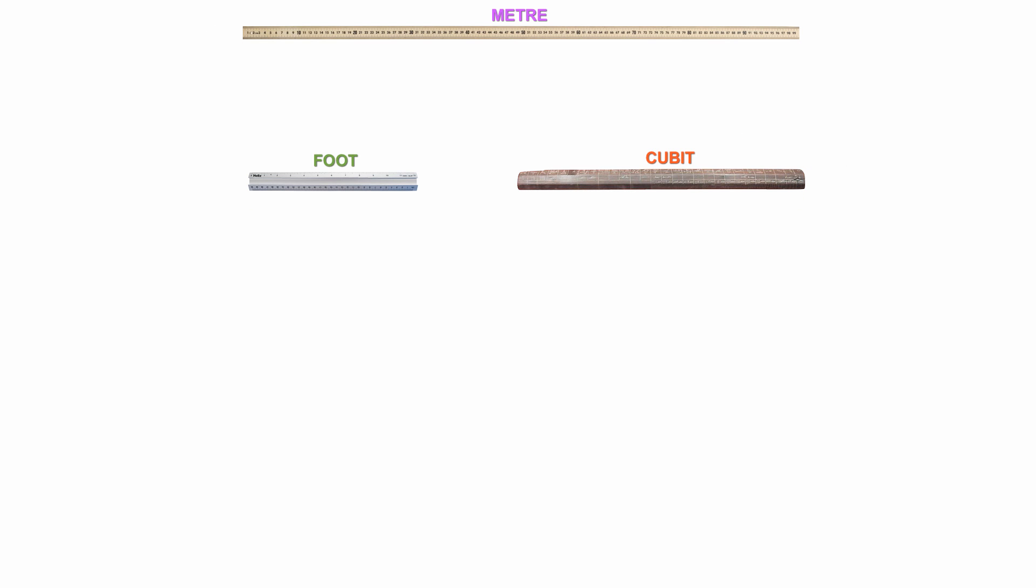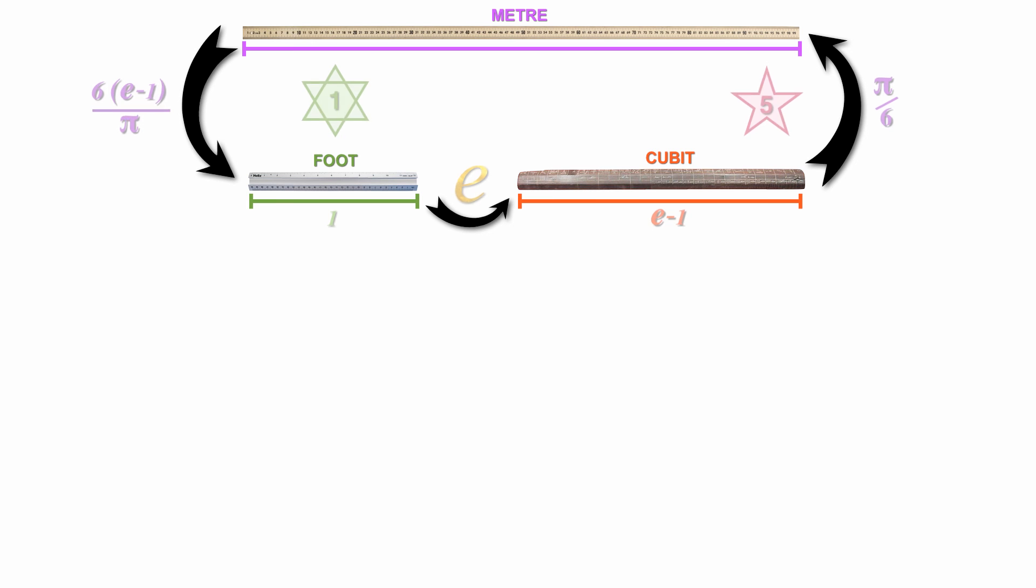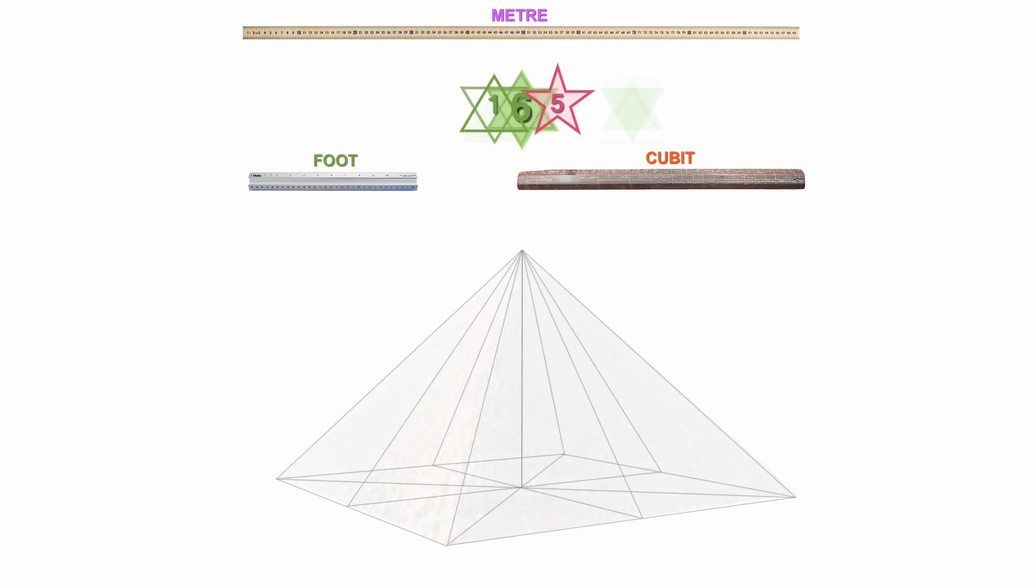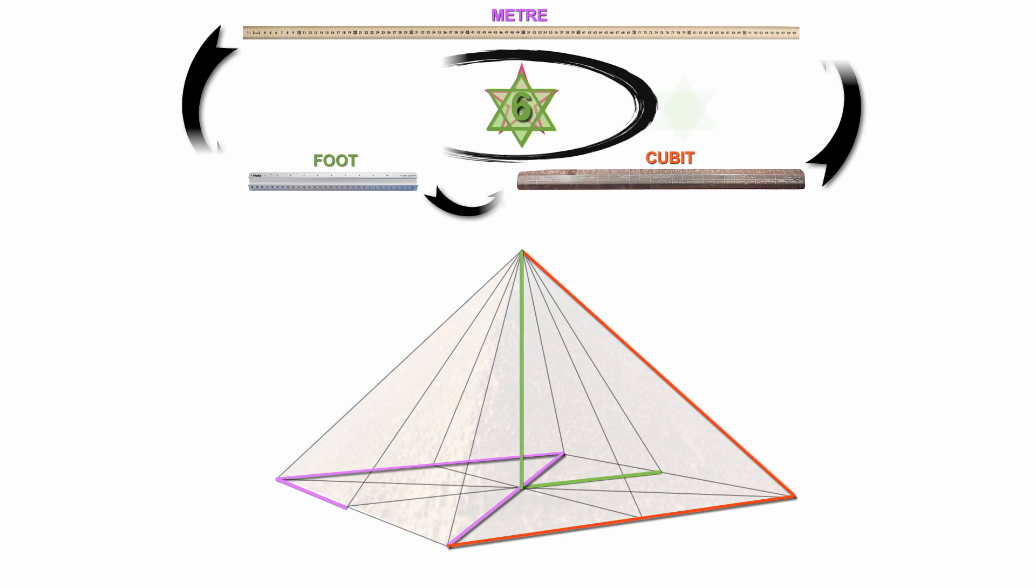This is a trinity of measures that fall back on themselves like an ouroboros swallowing his own tail. They each have specific lengths of measure, but they also exist as a three-in-one unit.